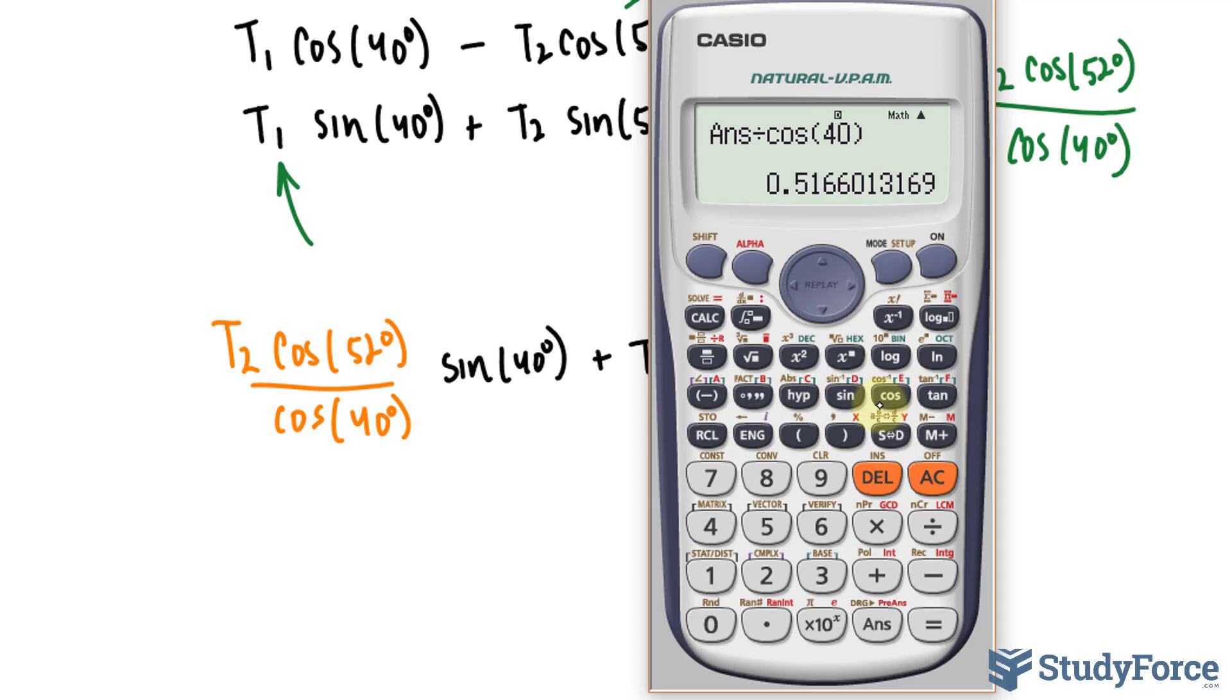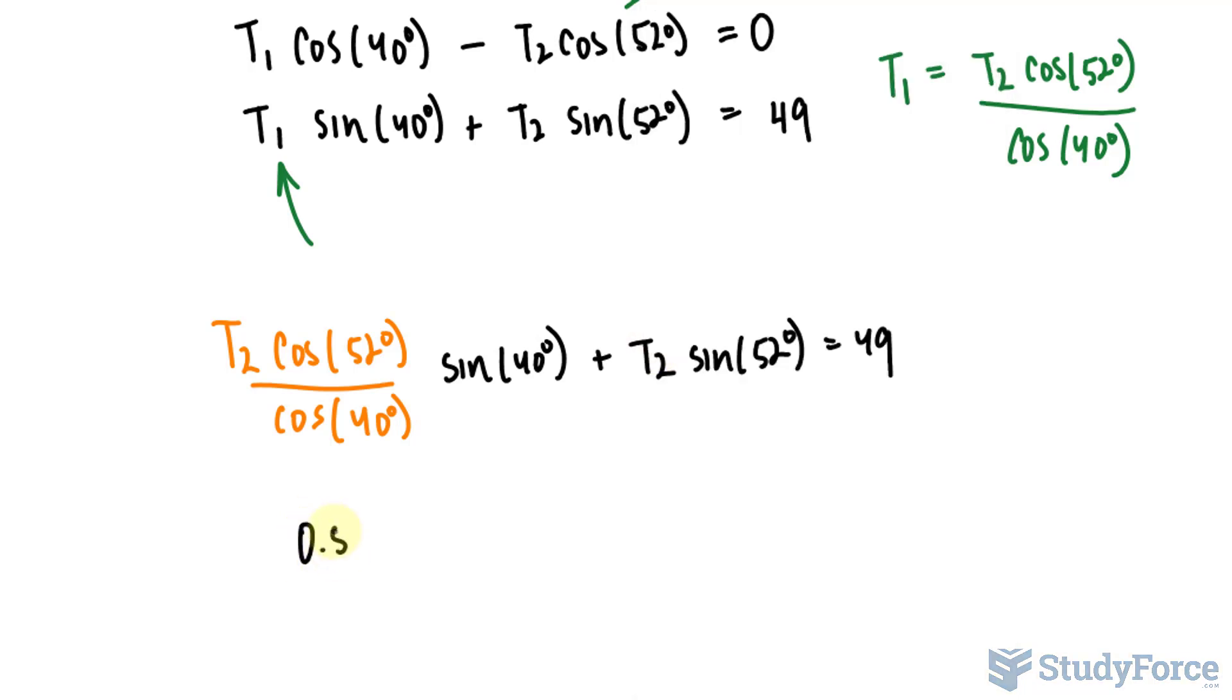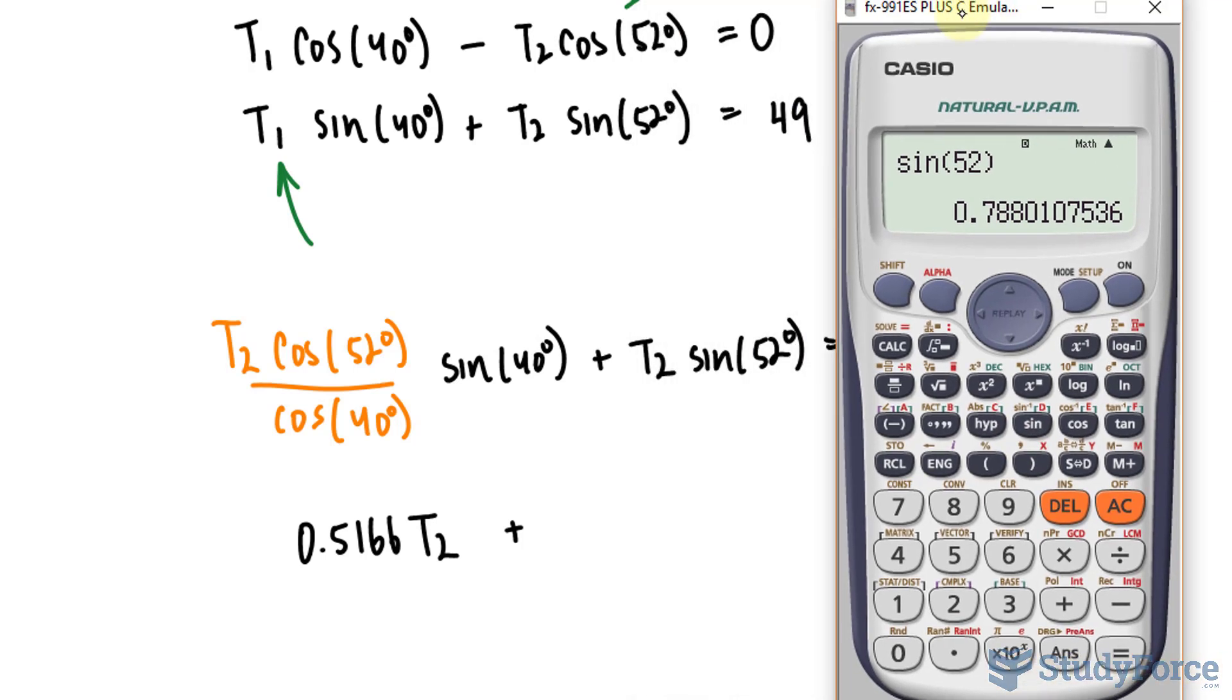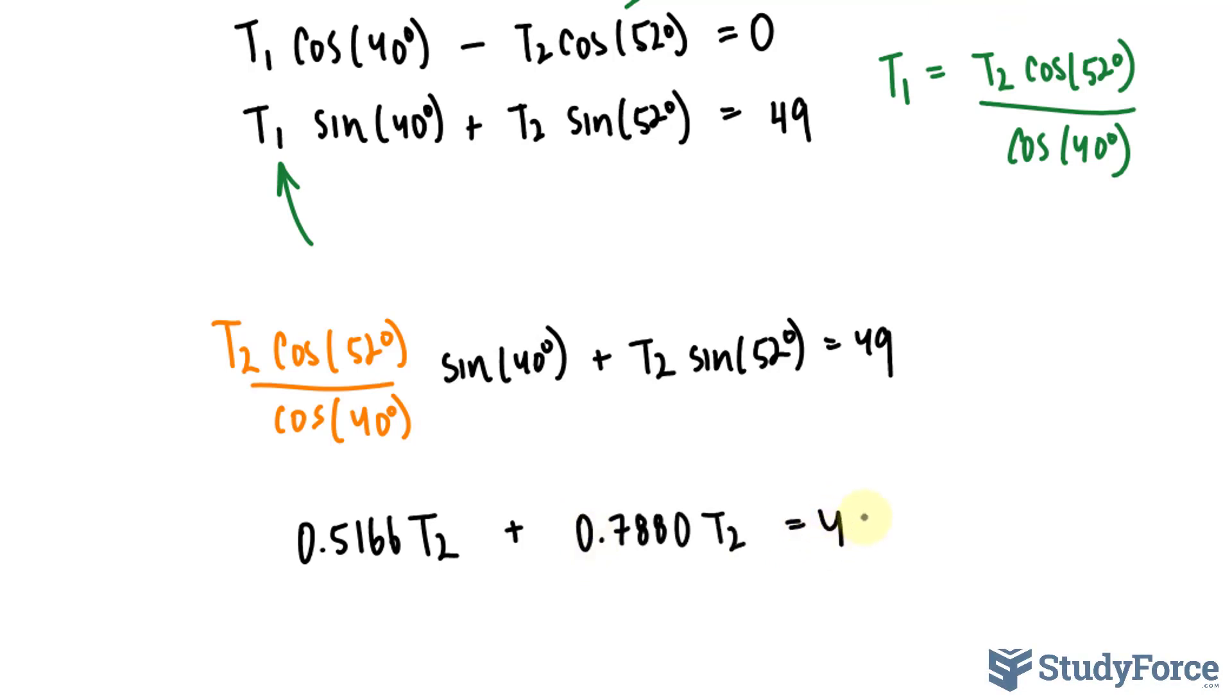So we have T sub 2 cosine of 52 degrees times sine of 40 degrees. Multiplying these two together, divided by cosine of 40 degrees. Make sure that your calculator is in degrees. We end up with 0.5166 times T sub 2 plus, over here, sine of 52 is approximately 0.7880 times T sub 2 is equal to 49.